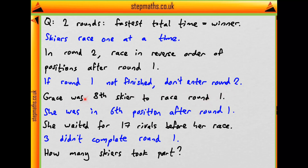Grace was the eighth skier to race in round one, and after round one she was in sixth position. She waited for 17 rivals before her race in round two. But three of the skiers that entered did not complete round one. Therefore, how many skiers took part in the competition?